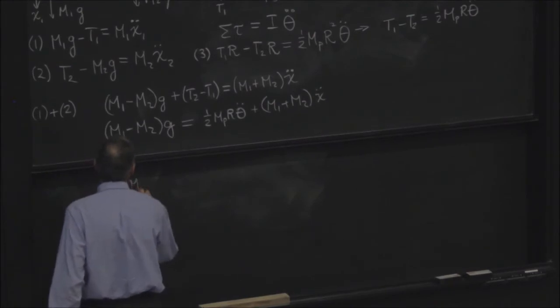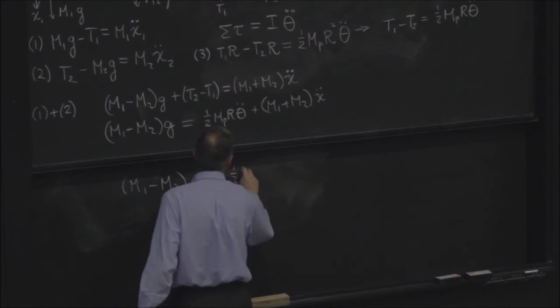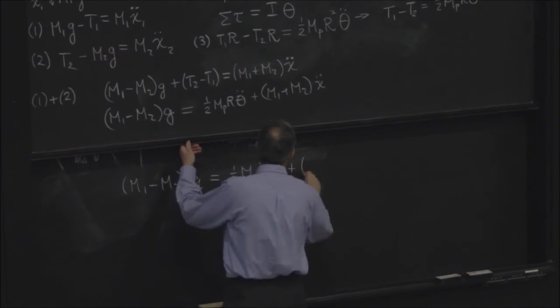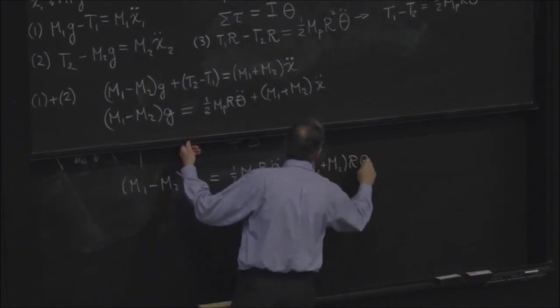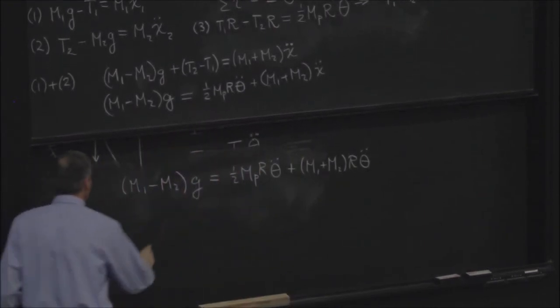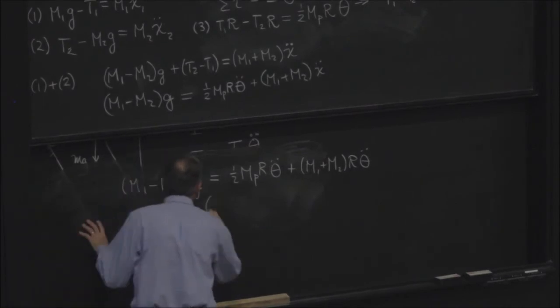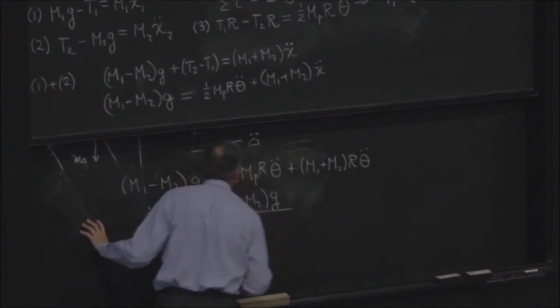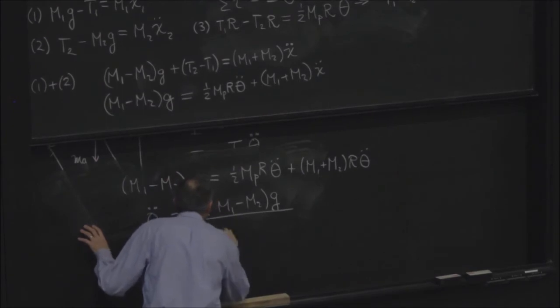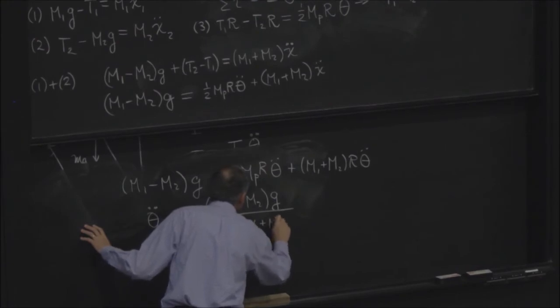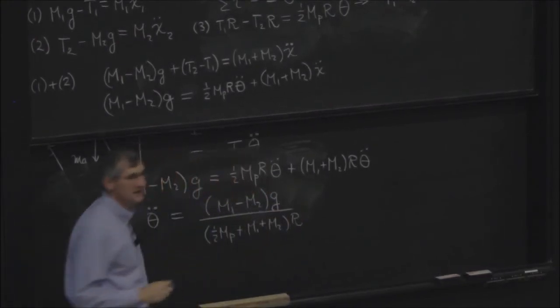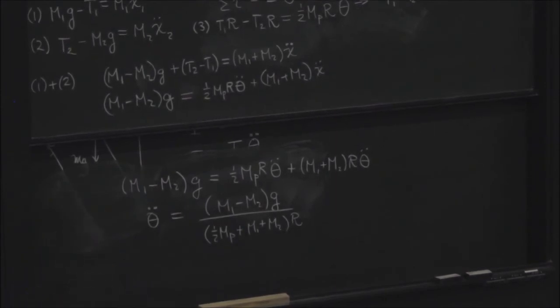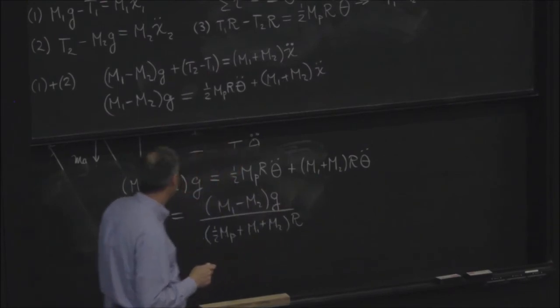So I have now m1 minus m2 g is equal to 1/2 mp r theta double dot plus m1 plus m2 r theta double dot. And therefore, the angular acceleration will be equal to m1 minus m2 g, that's the numerator, divided by 1/2 mp plus m1 plus m2 multiplying r. Let's check dimensions, are dimensions happy? g over r, right? The masses go out, g over r. That should be length per time squared divided by length, that's per time squared. That works.